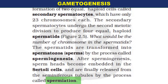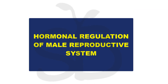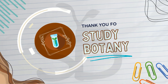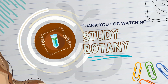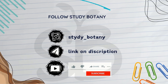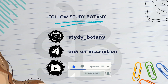The release of spermatozoa from the Sertoli cells is called Spermiation. In the next topic, we will talk about hormonal changes in the male body and how hormones help in spermatogenesis. That's it for today. Please join our discussion group on the Telegram channel and follow us on Instagram. Thank you, God bless you all, bye.